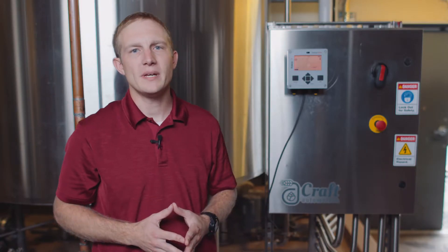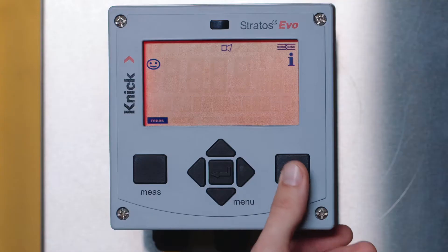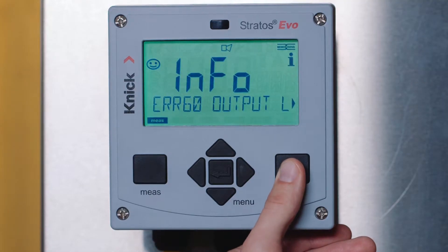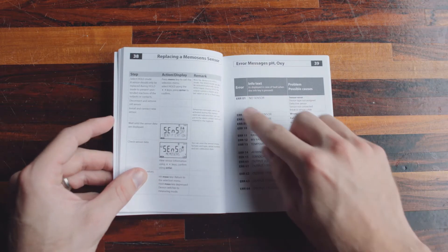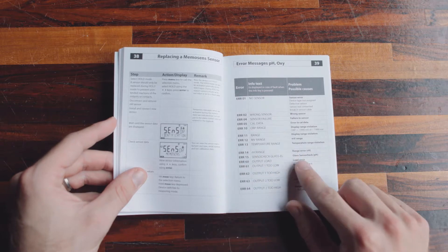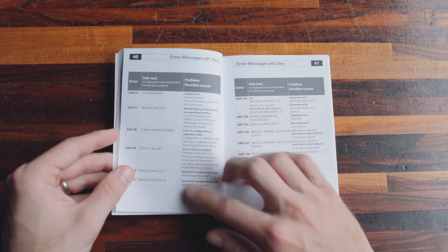Details on the error code can be seen by pressing the info button on the face of the transmitter. Further information and tips on fixing the issue can be found in the error messages section of the transmitter's manual.